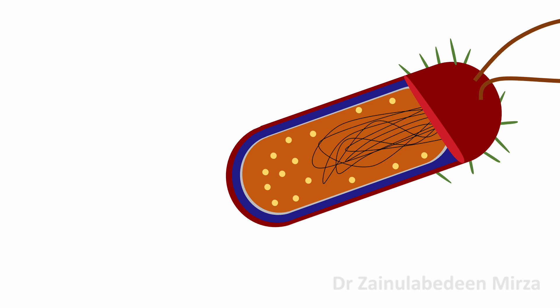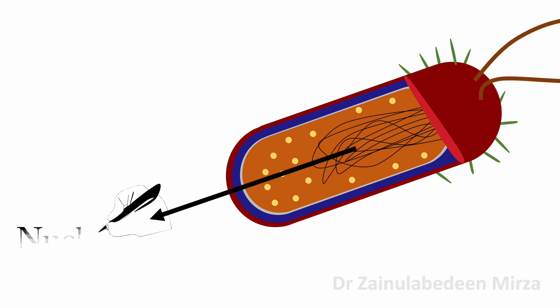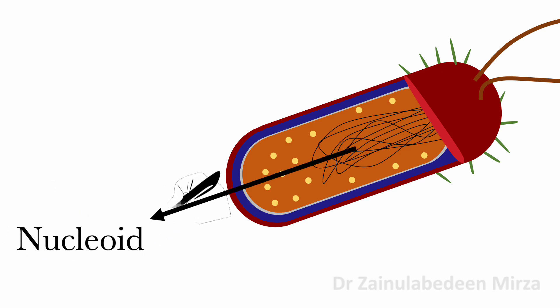Another structure found in prokaryotic cells is the nucleoid, which is the area of the cytoplasm that contains the prokaryotic single DNA molecule. Prokaryotic DNA is found in the nucleoid, and the DNA is the genetic material of the cell. It consists of a single loop called a circular chromosome.